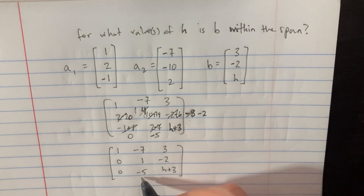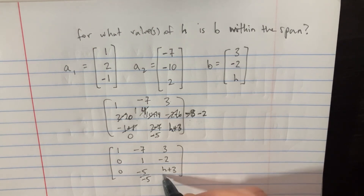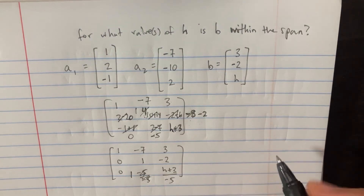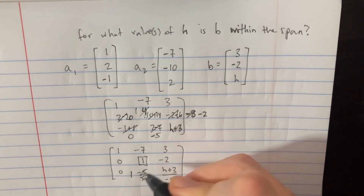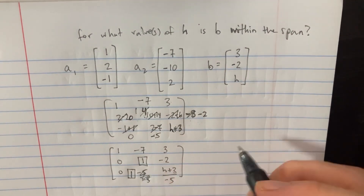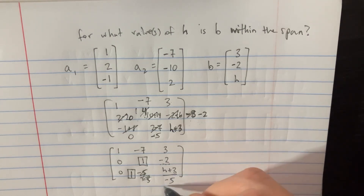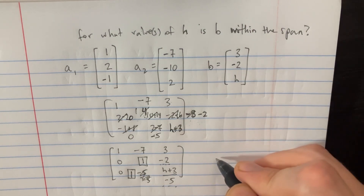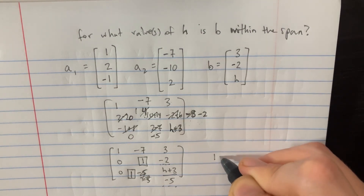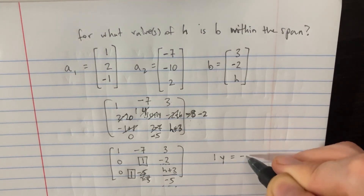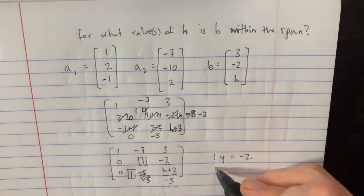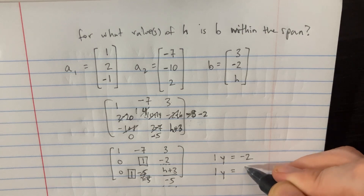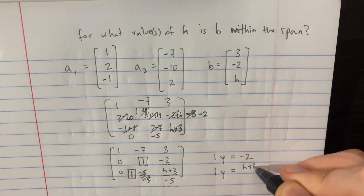At this point, let's go ahead and divide the third row by negative 5, leaving us with a 1 here. This is good enough to notice that we have two expressions for the same variable y — one from row 2 and one from row 3.